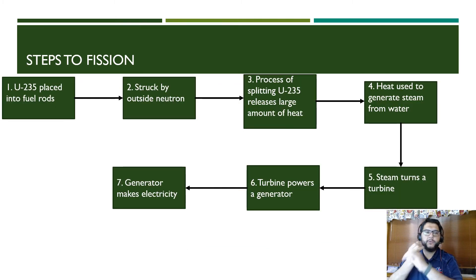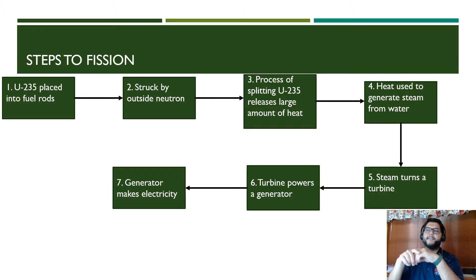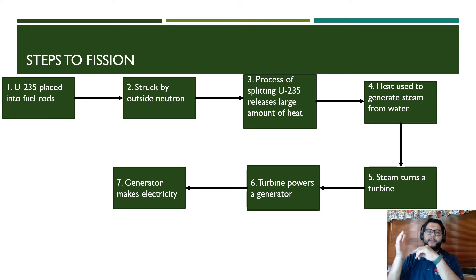You put the uranium-235 into a fuel rod, and then that gets struck by an outside neutron. The outside neutron splits the uranium-235, releasing a ton of heat. The next step is that heat being used to generate steam from water, and then the steam turns a turbine. The turbine is connected to a generator, and the generator makes electricity.